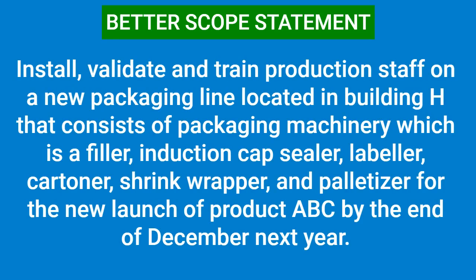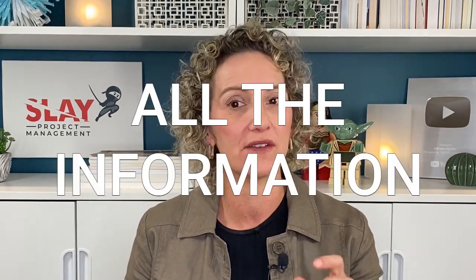Here's a better version: 'Install, validate, and train production staff on a new packaging line located in Building H, consisting of packaging machinery — a filler, induction capsular, labeler, cartoner, shrink wrapper, and palletizer — for the new launch of product ABC by the end of December next year.' You can see the difference. The second one has just a little more detail so that everyone knows what to expect, when, and where. The goal is to eliminate confusion.